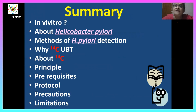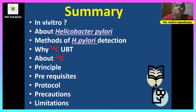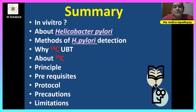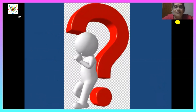To summarize: we covered what is in vivo, about Helicobacter pylori as a gram-negative spiral-shaped bacterium, methods of H. pylori detection including gastroscopy, stool antigen, serological testing, and the 14-carbon urea breath test, as well as the advantages of 14-carbon UBT, the radionuclide 14-carbon, and the principle, prerequisites, protocol, precautions, and limitations of this test. Thank you — please leave any feedback or questions.